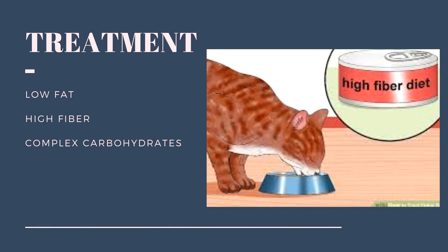In addition to insulin, the diet may be changed to a low-fat, high-fiber type of diet that contains complex carbohydrates. Several of these diets are available by prescription. Although it is difficult to train cats to eat meals, it is best if they eat around the time the insulin injection is given.